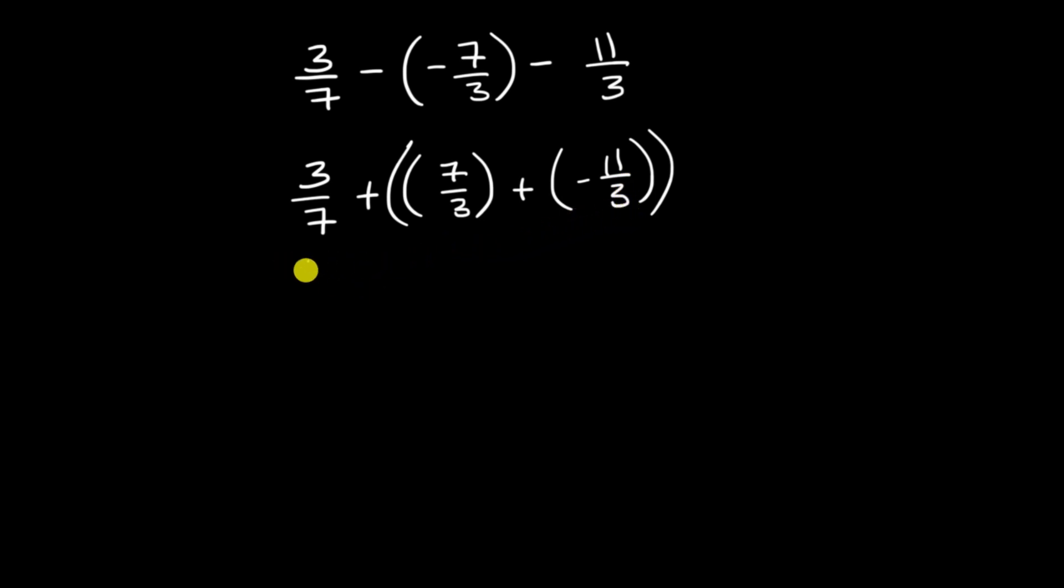Well, we have a common denominator. We could rewrite it like this: 3/7 plus, common denominator of 3, we could write 7 plus negative 11 in the numerator. And so 7 plus negative 11 is the same thing as 7 minus 11, because subtracting something's the same thing as adding its opposite. So 7 plus negative 11, we could get a number line out, but hopefully you've gotten some practice now. That is going to be negative 4.